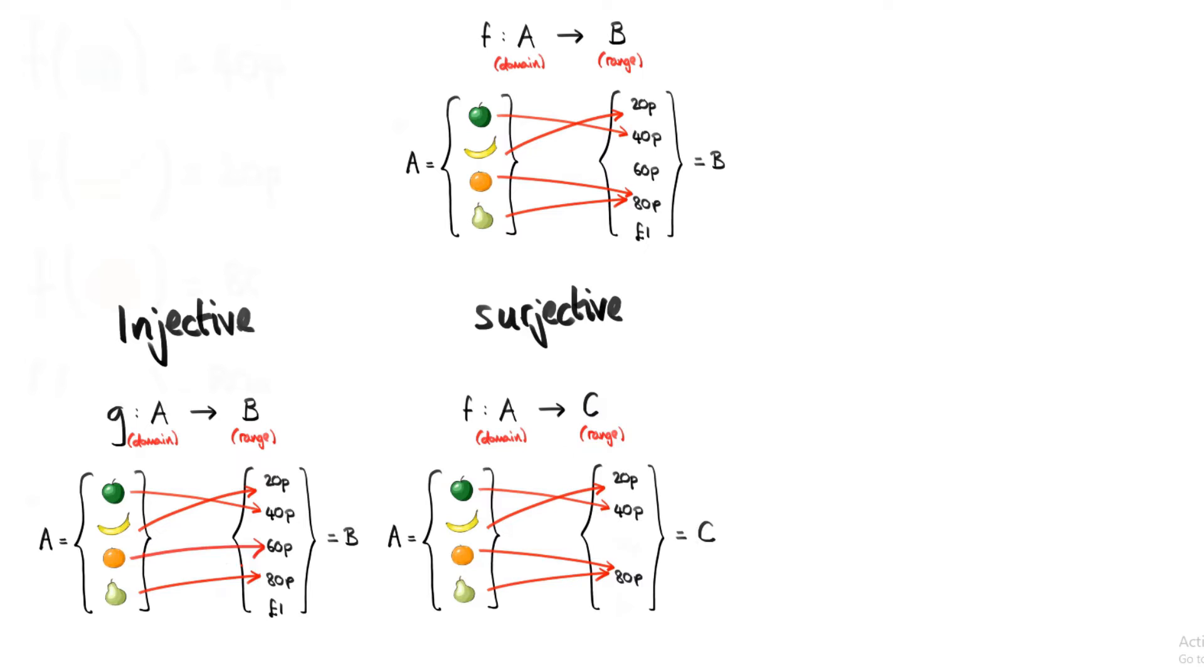And because what set the function takes as an input and what set the function takes as an output is an intrinsic part of that function, then we also have to accept that this is going to be a different function. Let's continue along the alphabet and call this function H. Now we have the definition of an injective function and a surjective function. All that's left is to define a bijective function. But we've already done all of the work, because a bijective function is simply a function that's both injective and surjective.